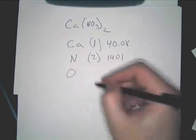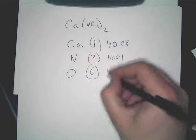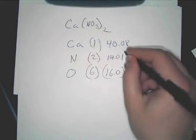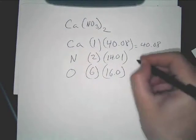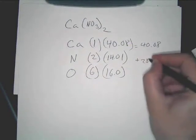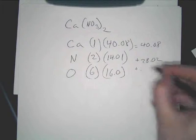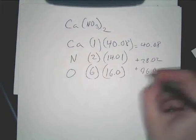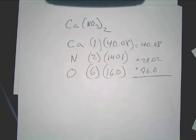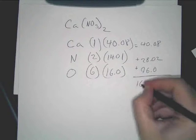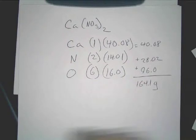Oxygen — how many of those do we have? Six. So that's 16.0 times six. So that's 40.08 plus 28.02 plus 96. You add this up and what do you get? 164.1 grams. Is that what you guys get? 164.1 grams? Yeah. Okay.